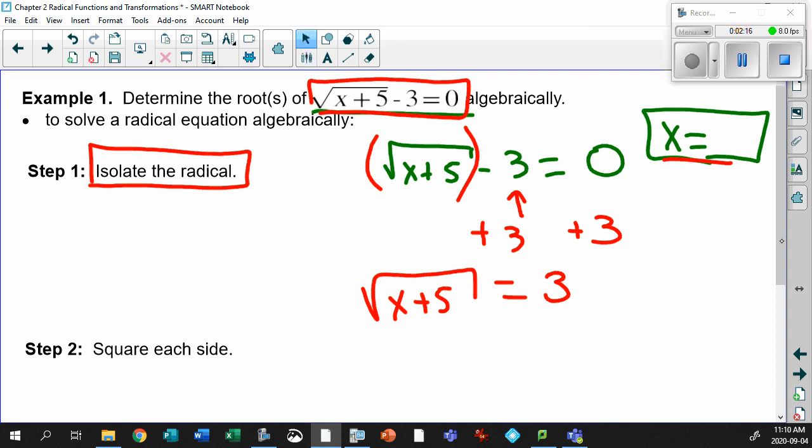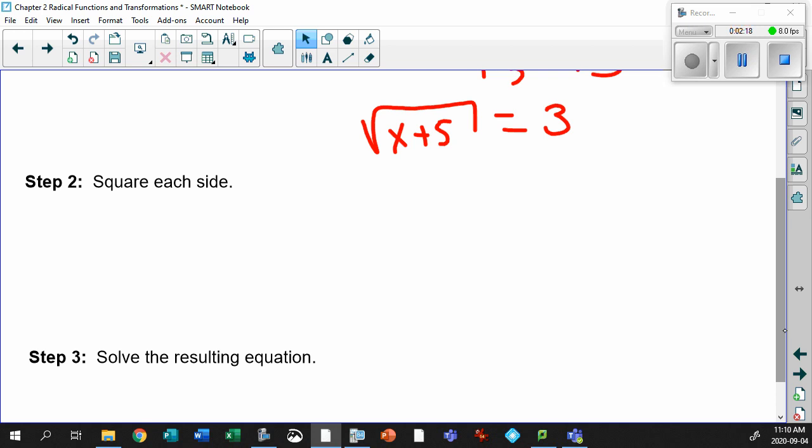Okay. Then how do you get rid of the square root? Well, that's really simple too. All you got to do is square both sides. The opposite of square root is square. All right. So all you got to do is take this guy, square this side, square this side, and you're good to go.